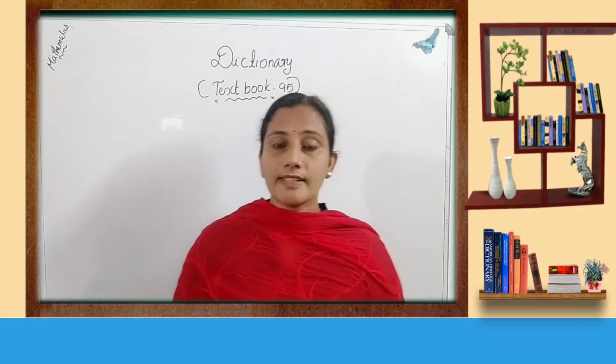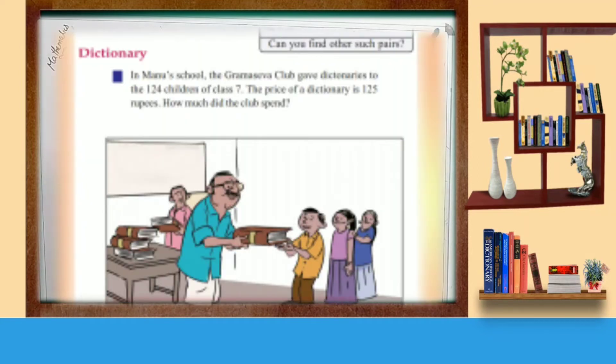So first let us read the activity. In Manu School, the Grama Seva Club gave dictionaries to 140 children of class 7. The price of a dictionary is 125 rupees. How much did the club spend?